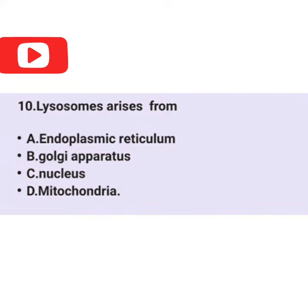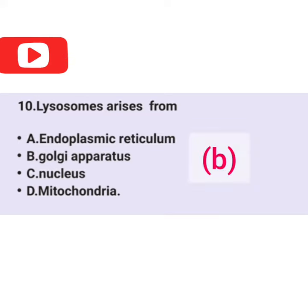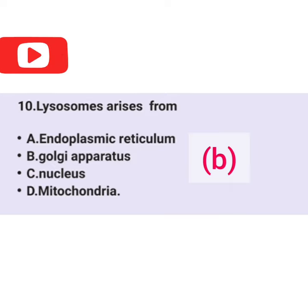Question 10. Lysosomes arise from B: the Golgi apparatus.